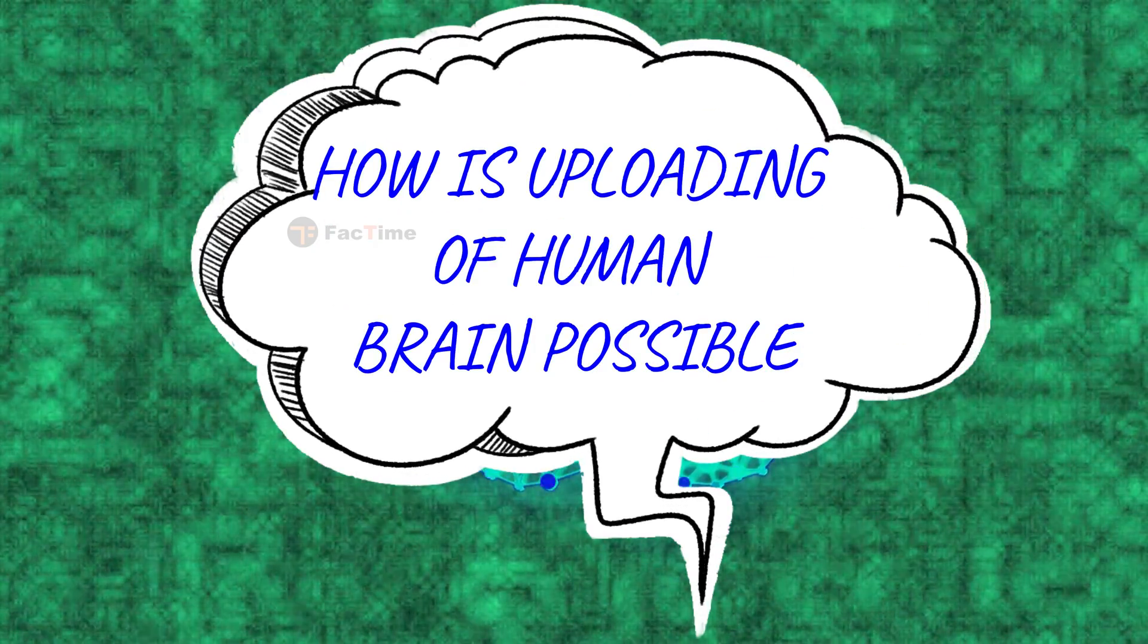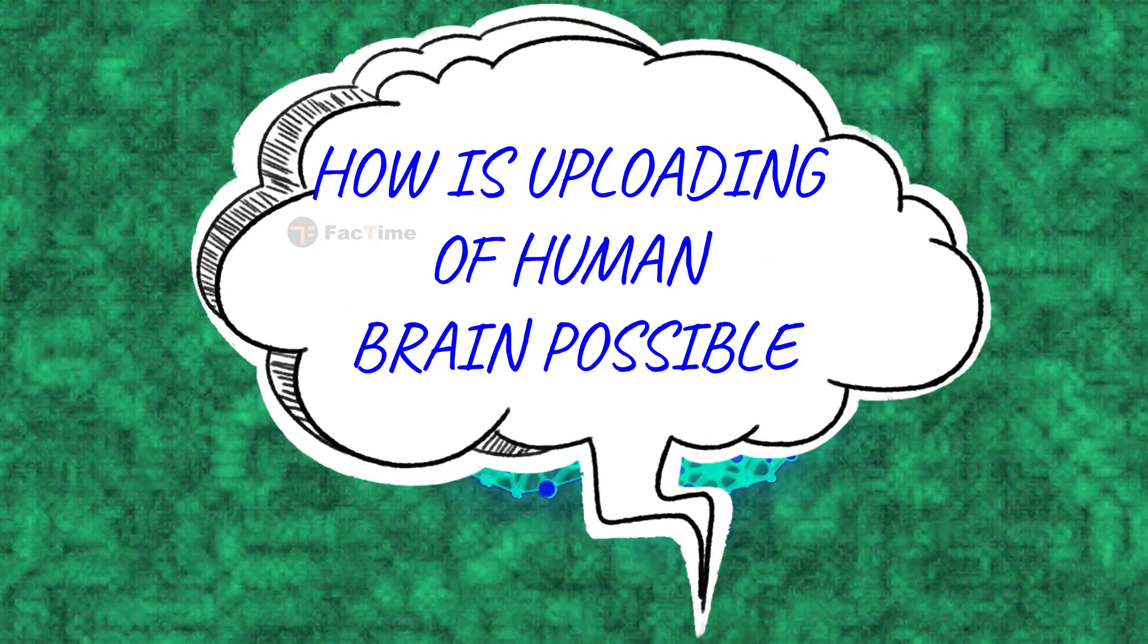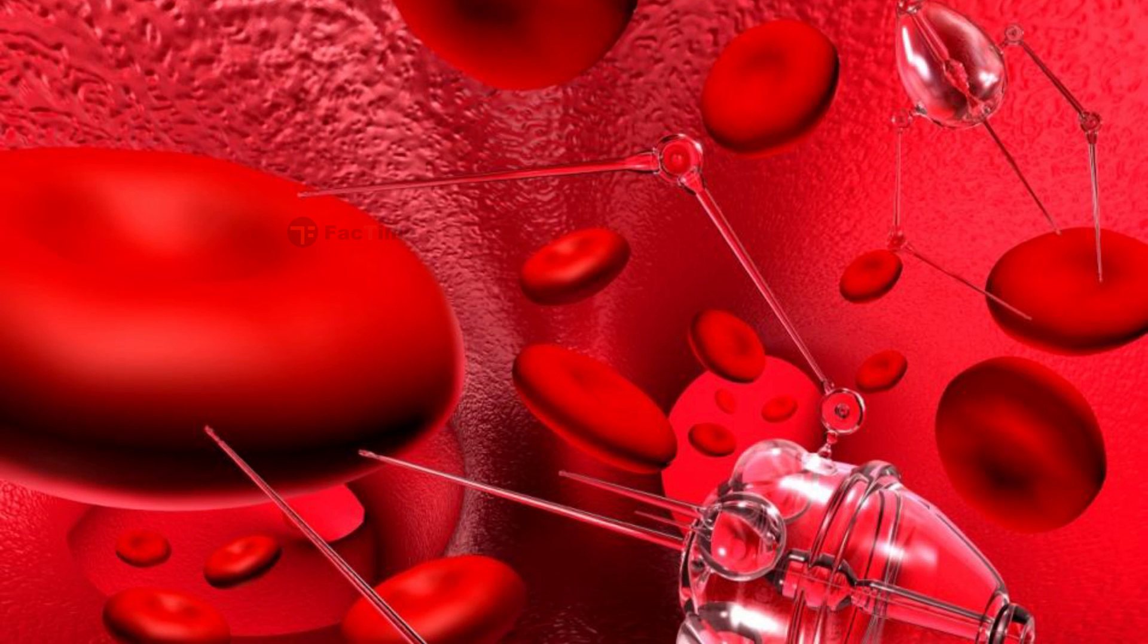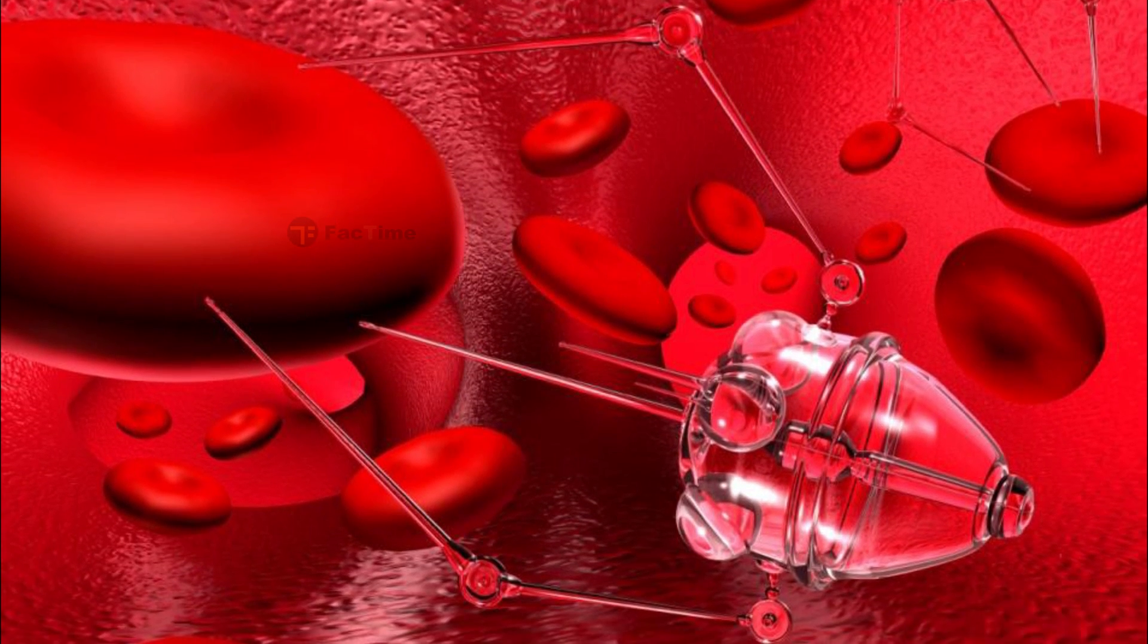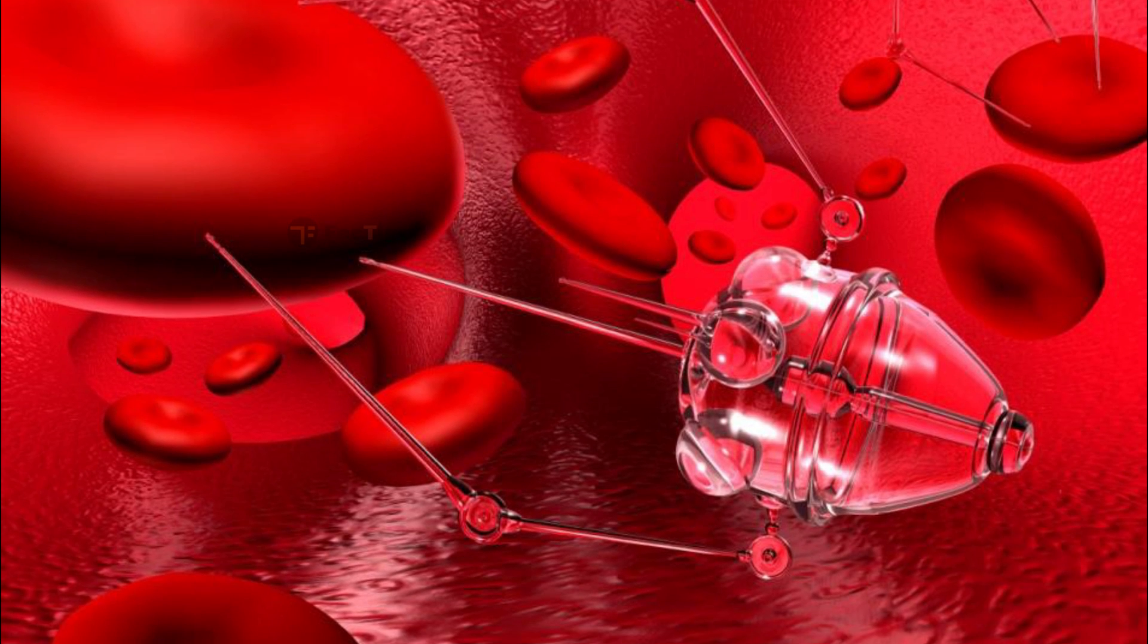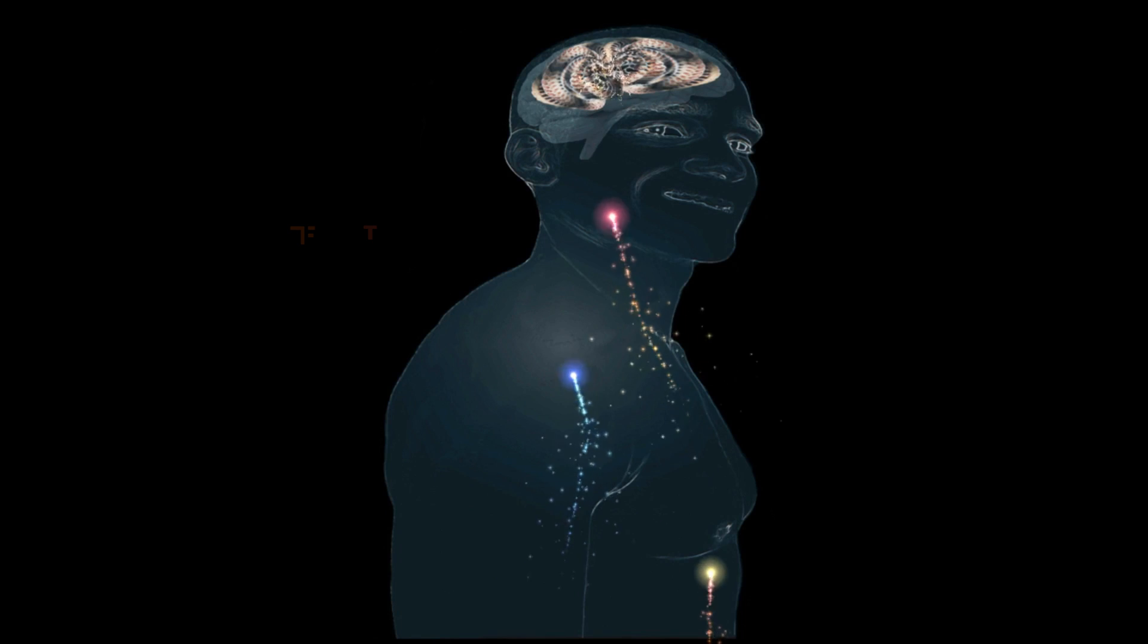So friends, how is the uploading of a human brain possible? This is possible by the use of small robots known as nanobots. These robots are small enough to travel throughout our circulatory system, traveling into the spine and brain, they will be able to monitor the activity and structure of our central nervous system.